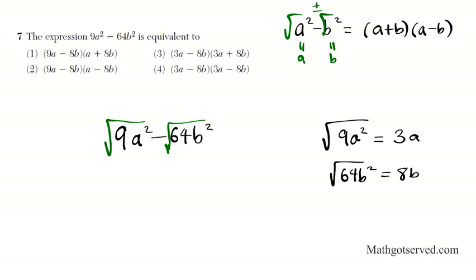So I'm going to add and subtract these square roots. So the factored form is going to be 3a plus 8b times 3a minus 8b. Let's see what option this one matches.